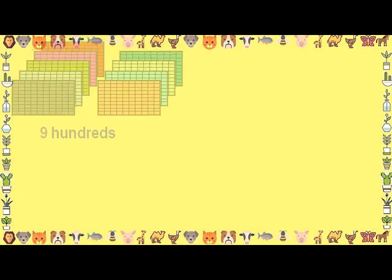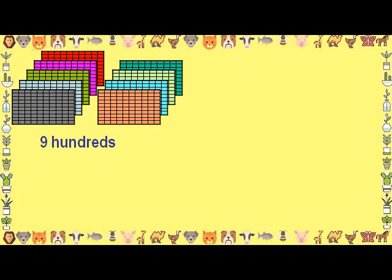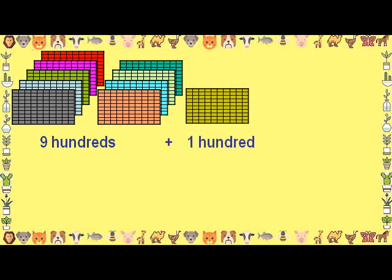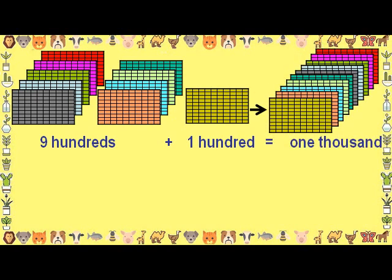Each table above contains 100 boxes. So, the 9 tables have 900 boxes. When we add 1 table of 100 boxes to them, the total number of boxes in the 10 tables becomes 1000.